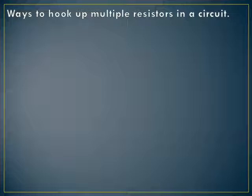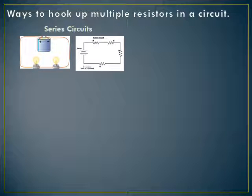We're going to move up in complexity from single resistor circuits into circuits that have multiple resistors. There are fundamentally two different ways of hooking up more than one resistor. The first is known as a series circuit. The word series means to do something one at a time, back to back — like a series of books or movies. In a series circuit, the electrons have to go through both light bulbs in turn, one after the other, before returning to the battery. You can put as many resistors in a series circuit as you want.